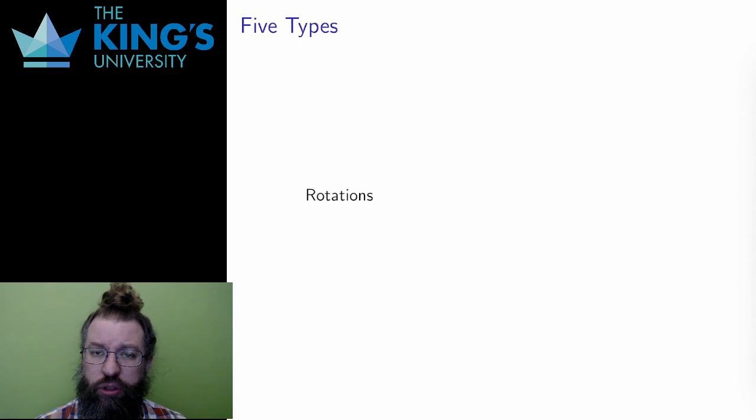It has to preserve the origin and it has to send lines to lines. It turns out, very conveniently, that there are five basic types of transformations, and that all transformations of R2 can be built out of these five types via composition.